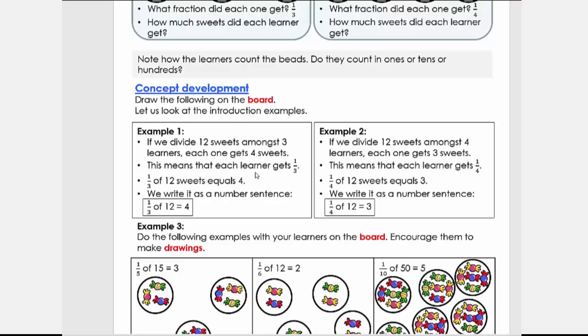How will we write this as a number sentence? Yes, one-third of 12 equals to four. Can you see now we worked from what we have to the number sentence?